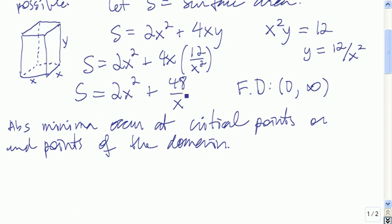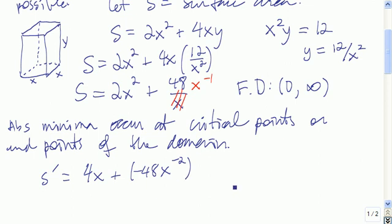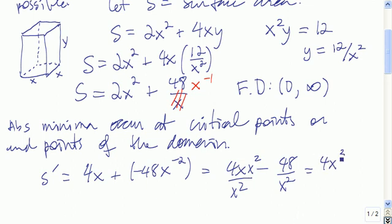To find critical points, we have to differentiate s. We get 4x for the first piece, and 48 divided by x is really 48x to the negative 1, so differentiating gives negative 48x to the negative 2. Simplifying, we get 4x minus 48 divided by x squared. Getting a common denominator by multiplying top and bottom by x squared gives us 4x cubed minus 48, all divided by x squared.